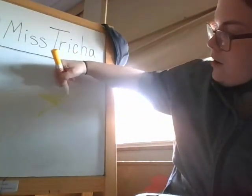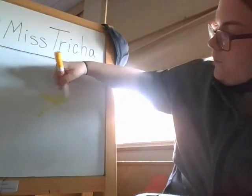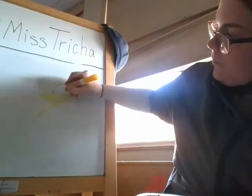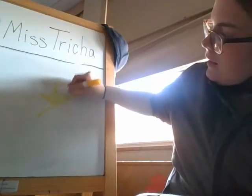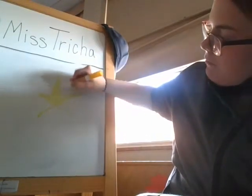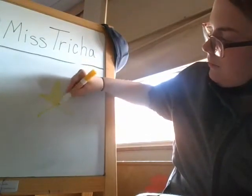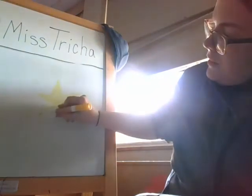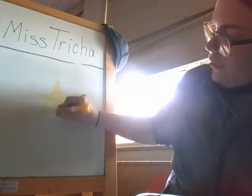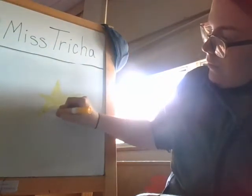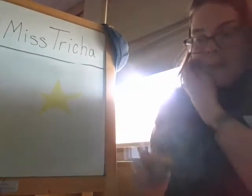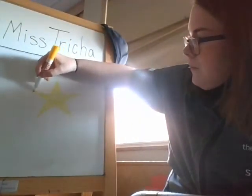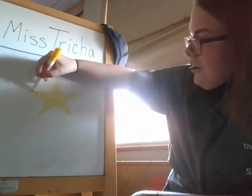Can you see that from where you are at home? Let me color it in so it's a little easier to see. It's got five points on it. Often when you see them, you'll see them the color yellow. Do you know what shape that is? It's a star.